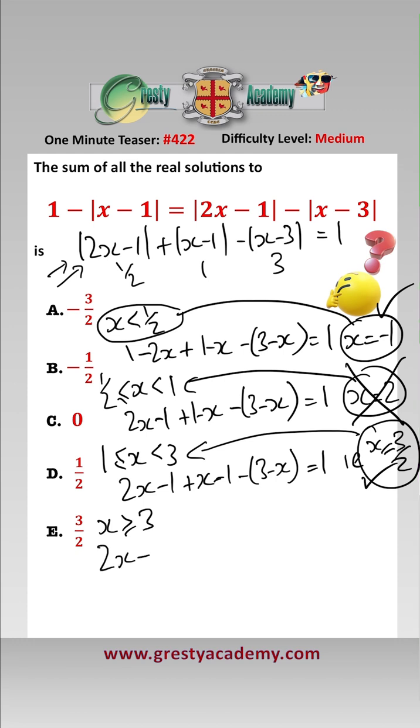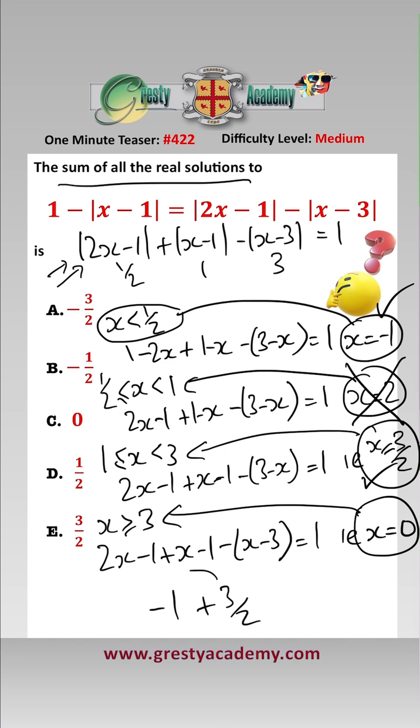Finally we have to look at x greater than or equal to 3, when we have 2x minus 1 add x minus 1 minus x minus 3 equals 1, i.e. x equals 0. That is not in that region. Therefore the two solutions are x equals minus 1 and x equals 3 over 2. We're asked for the sum of the real solutions: minus 1 add 3 over 2 is a half, which is answer D.